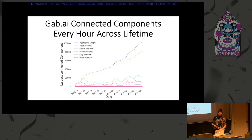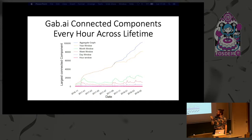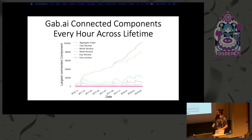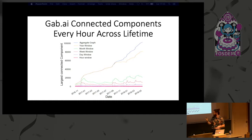A concrete use case: we looked at a network called gab.ai, which is a Twitter clone. It's a right-wing forum, but they had an open REST API so I downloaded all of their posts between the end of 2016 up until mid-2018. We then looked at, if we set a query running for that whole range of time hopping forward an hour at a time, what changes do we see in something like the largest connected component? For this, we set several different window sizes: a very small window like an hour, a day, a week, a month, a year, and then the full aggregate graph.